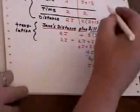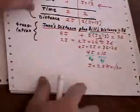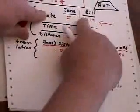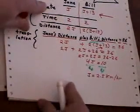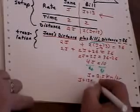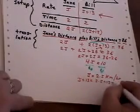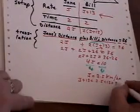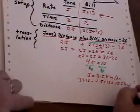Now I can go up and immediately read off from there, go right back up there, and find Bill's rate is J plus 13. So I can say J plus 13 is 2.5 plus 13 is 15.5 kilometers per hour.